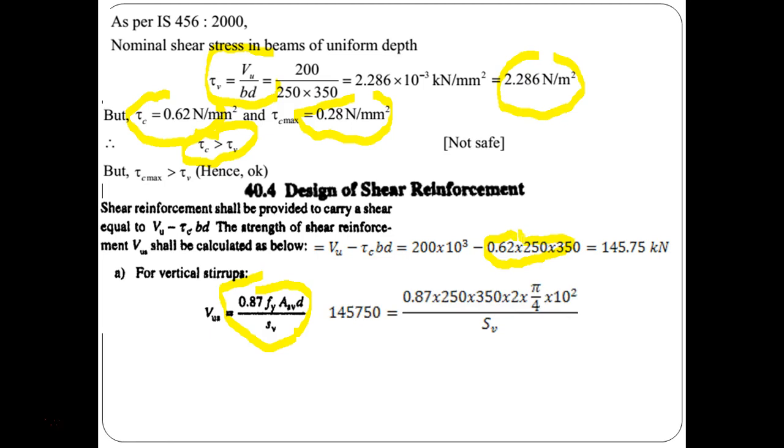Similarly, we can calculate spacing of the shear reinforcement. Now, since VUS we have calculated, this is 0.87 Fy is 250. ASV, so D we already know is 350 and ASV since 10 mm diameter bar is to be provided that is 2 numbers. So, from here we can simply calculate SV that is spacing of shear reinforcement that is 82.04 mm. Now, since we wanted 8.2 in centimeter.